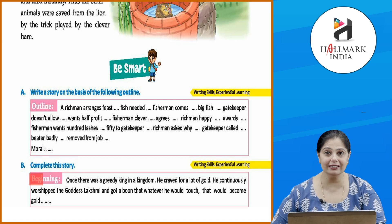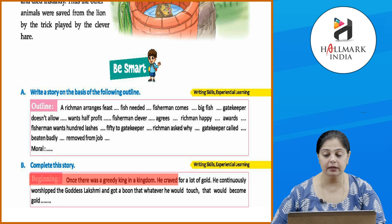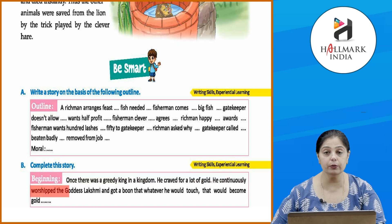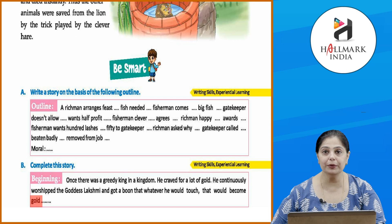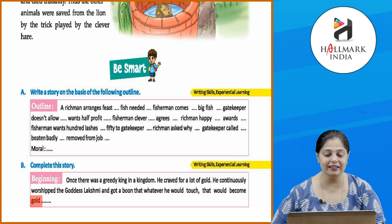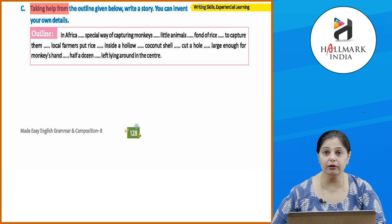Next, complete the story from the following introductory lines: 'Once there was a greedy king in the kingdom. He craved for a lot of gold. He continuously worshipped the goddess Lakshmi and got a boon that whatever he would touch would become gold.' Now complete this beautiful story.